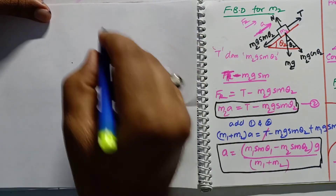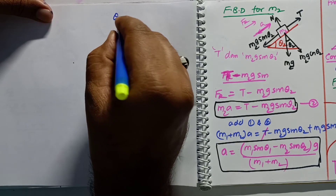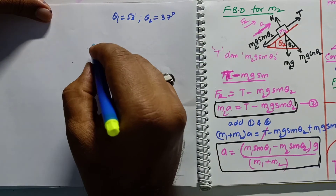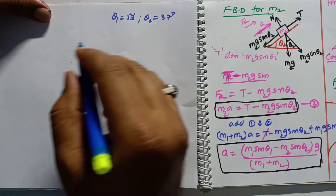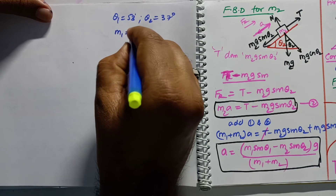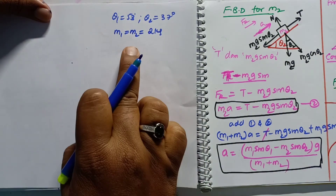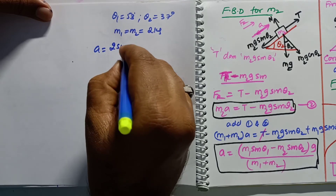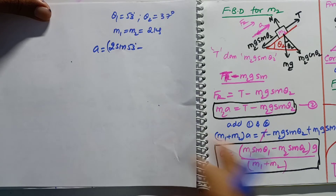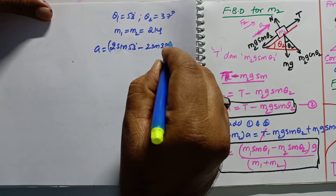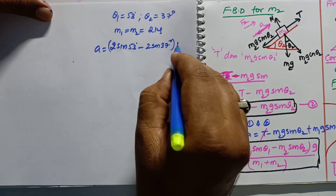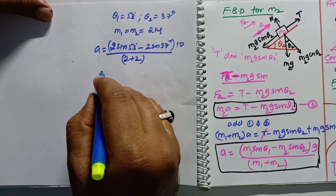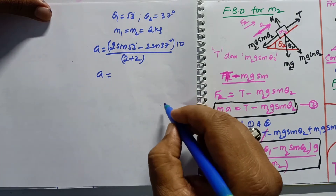Now substituting the given values: θ1 = 53°, θ2 = 37°, and m1 = m2 = 2 kg. So acceleration = [2·g·sin53° − 2·g·sin37°] / (2 + 2). With g = 10, this becomes a = 2·sin53° − 2·sin37°, all multiplied by 10, divided by 4.